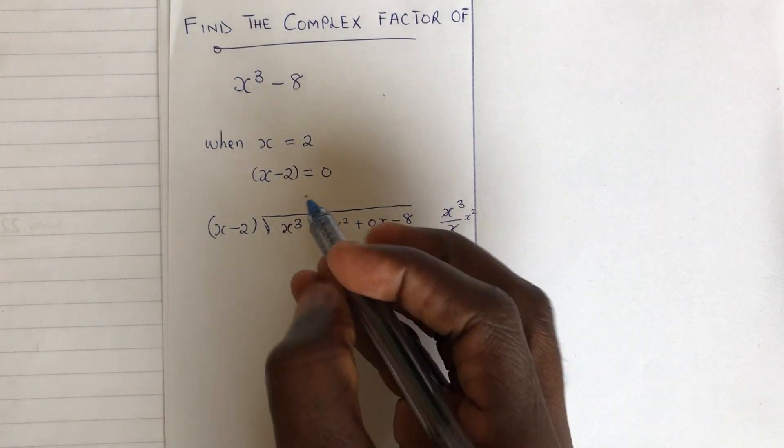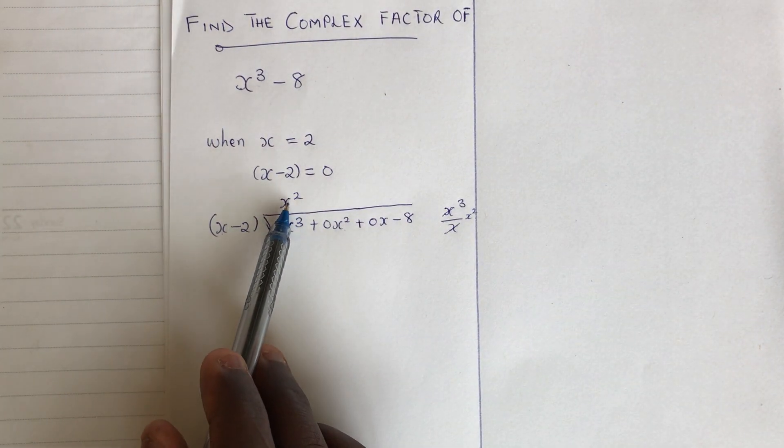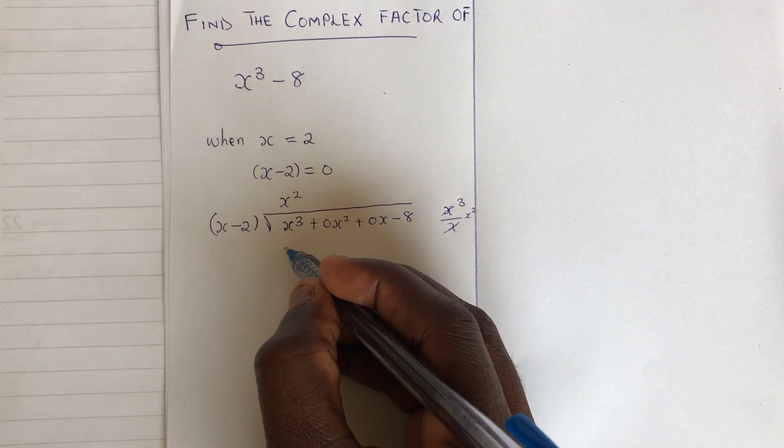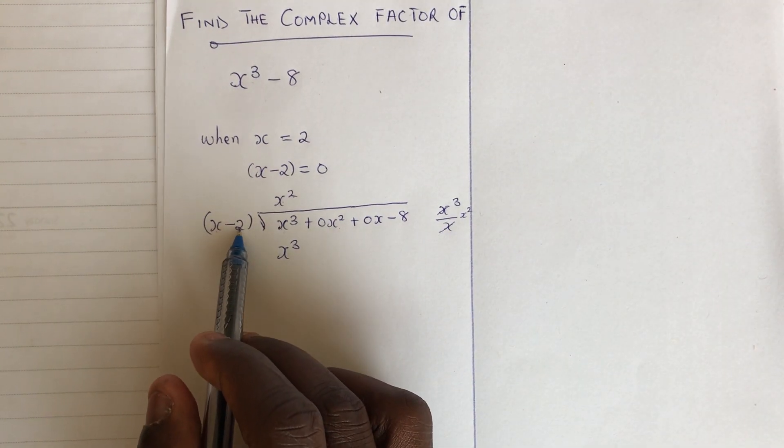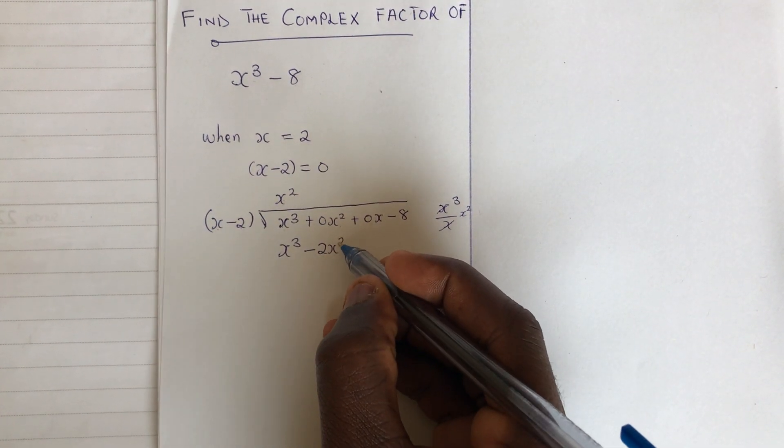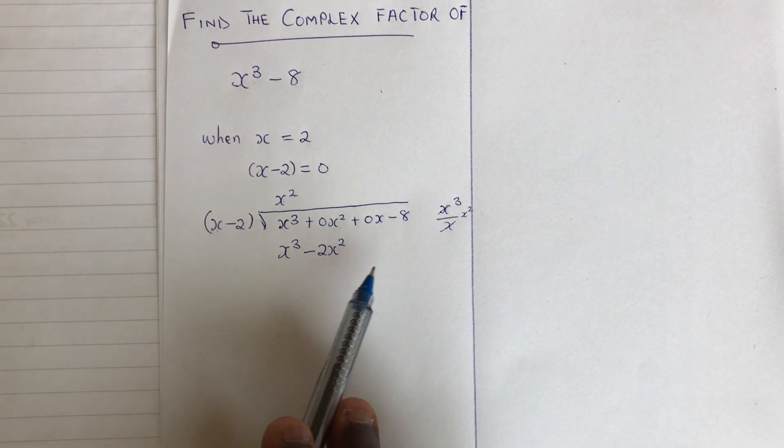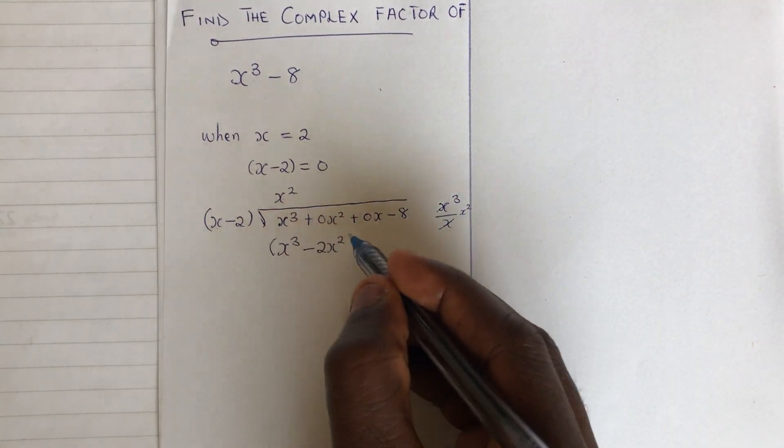You write the x squared here, at the top here. Use x squared to multiply the divisor. So x squared times x is giving us x cubed. Then x squared times negative 2 is giving us minus 2x squared. Now we are subtracting all these results from our dividend.